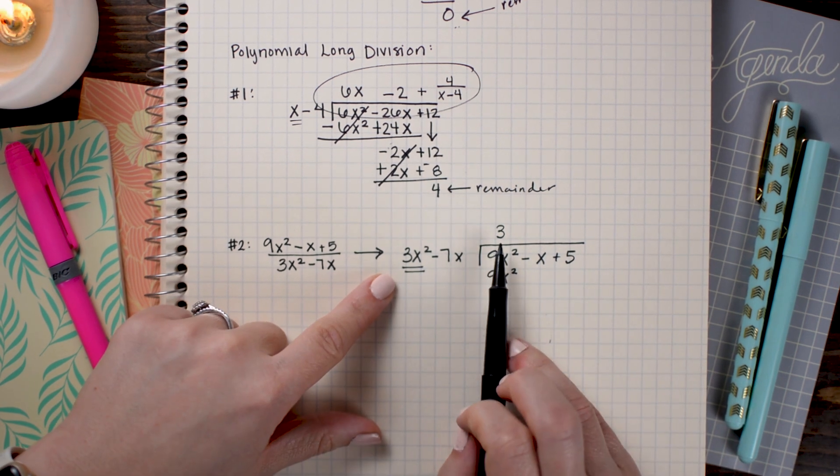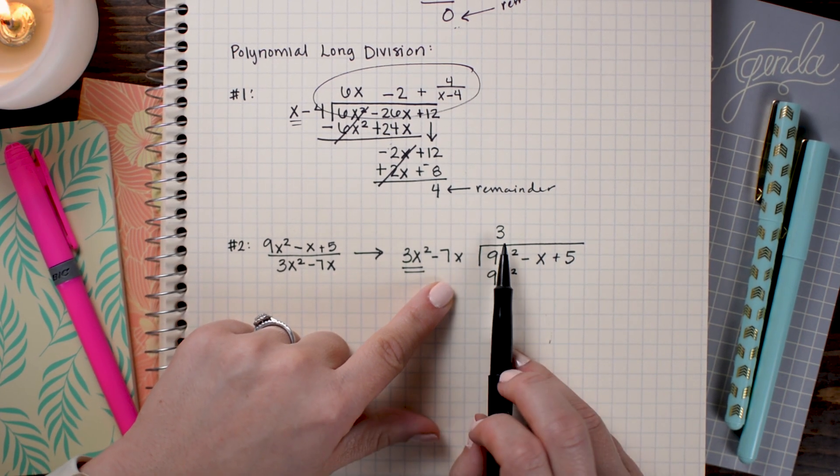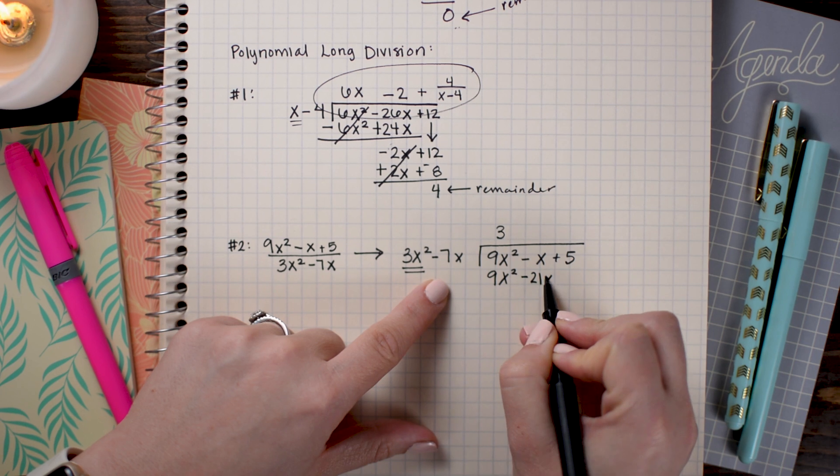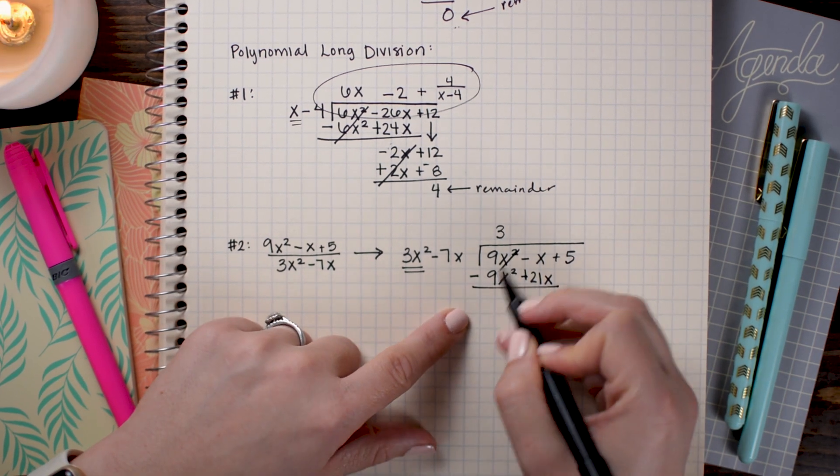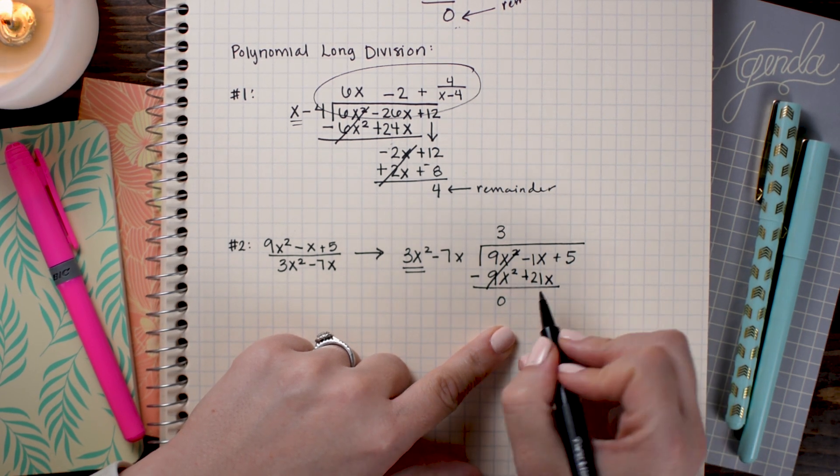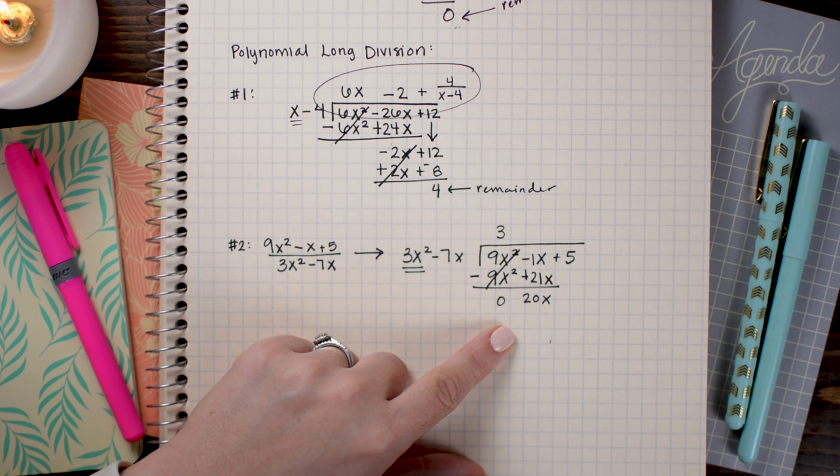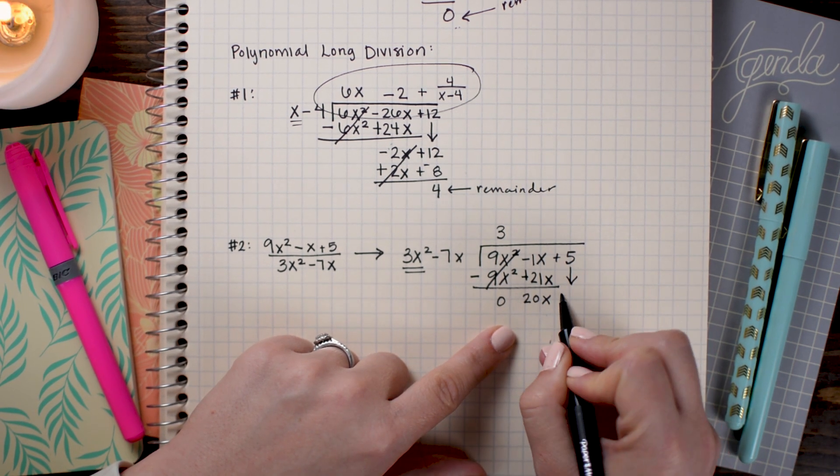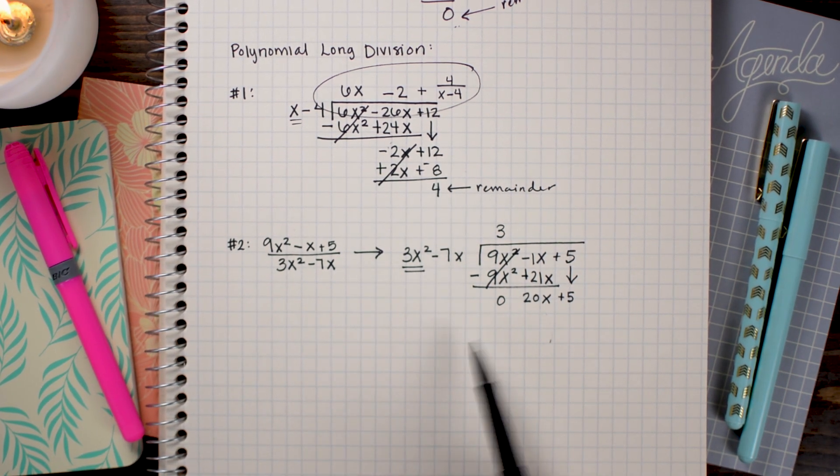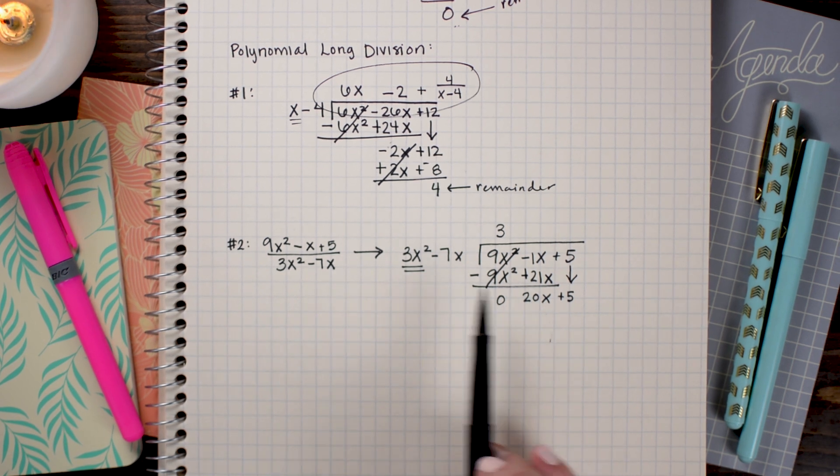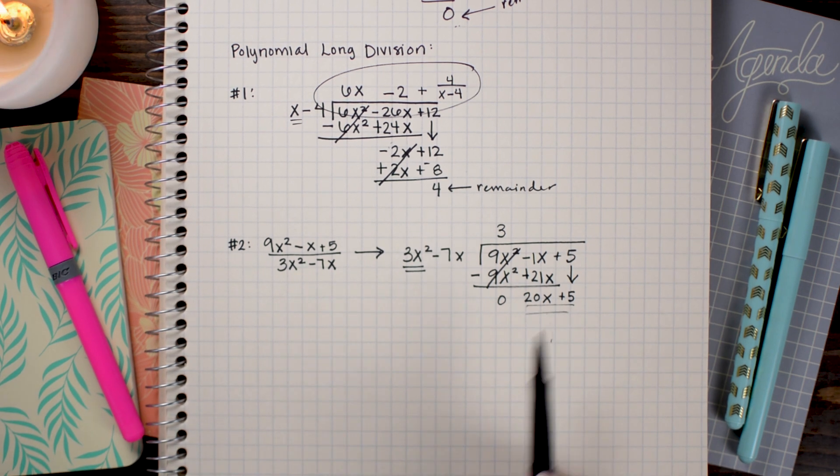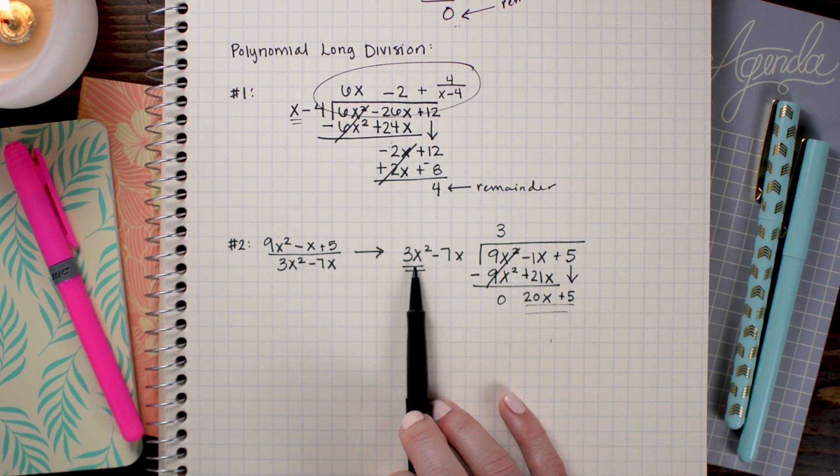So to do that, I need to multiply by 3. So I'm going to put a 3 up here since 3 times 3x² gives me 9x² exactly. Once again, I'm going to multiply that number also with the other term in my divisor. So here I have 3 times -7x to make -21x and I'm going to subtract. -1x + 21x is positive 20x. Next, I'm going to bring down that next number. Since 3x² has a higher power than 20x, I am done with my division here and this is going to be the remainder. So I'm simply going to write it over top of 3x² - 7x.